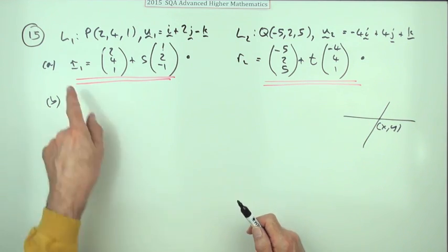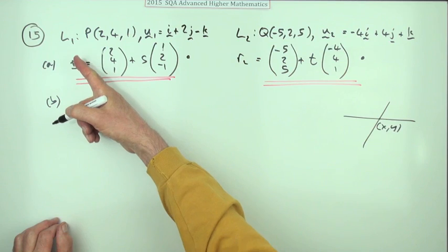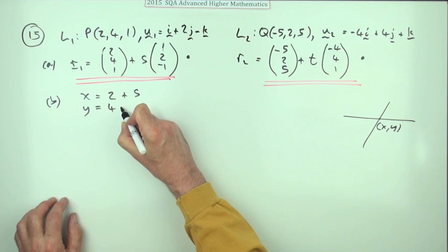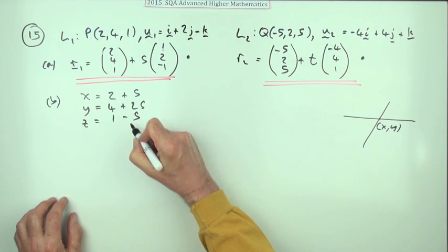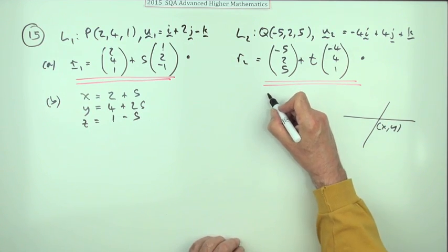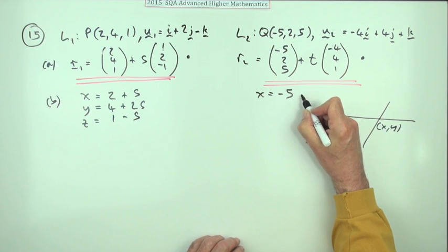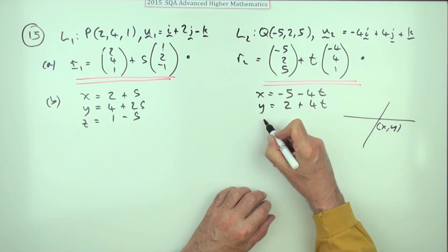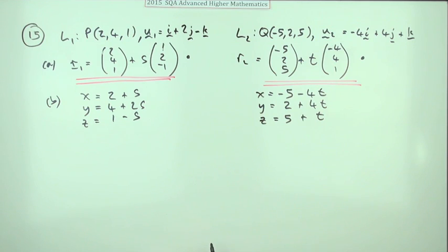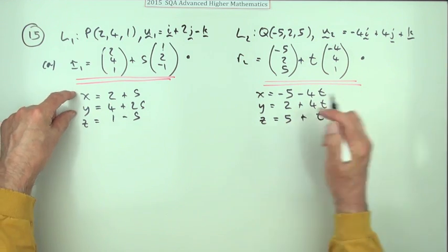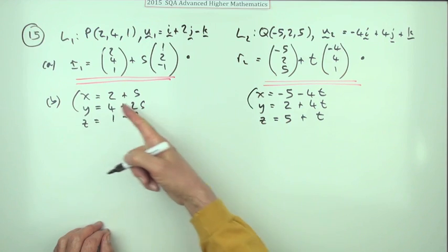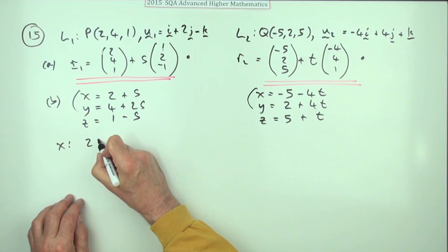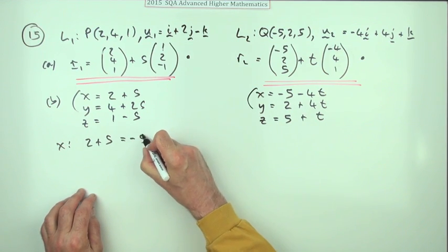First, write the parametric equations: for L1, x = 2 + s, y = 4 + 2s, z = 1 − s; for L2, x = −5 − 4t, y = 2 + 4t, z = 5 + t. To find the xy intersection, equate the x-components: 2 + s = −5 − 4t, which rearranges to s + 4t = −7.